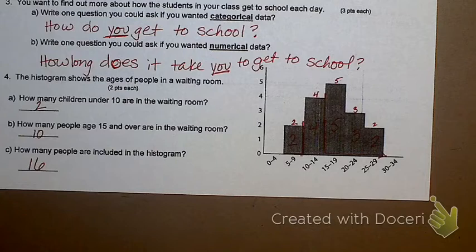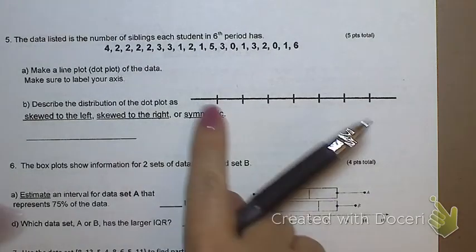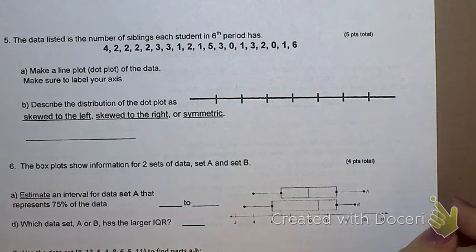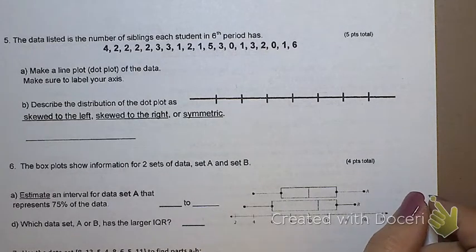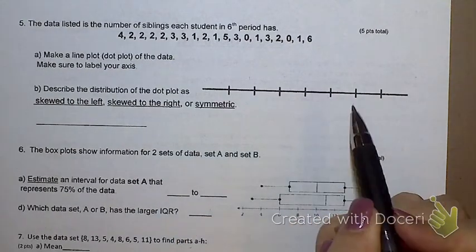Turn the page. The data listed is the number of siblings each student in sixth period has. I think I asked my sixth period a long time ago, and now I've just kind of manipulated the data how I want it to. Make a line plot or a dot plot of the data. Make sure to label your axis. I must see numbers under these little dash marks. I have made sure that there are enough lines for you to put every number you need to put. You may not be able to start necessarily at zero. For example, if your numbers go from three to eight, there's enough lines for you to number three, four, five, six, seven, eight.